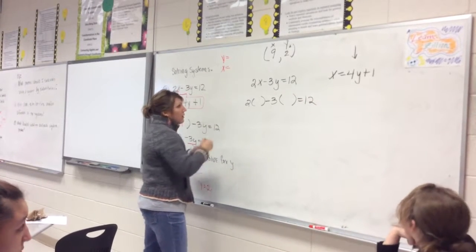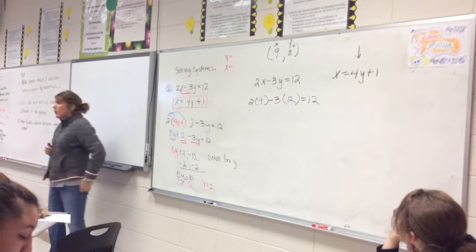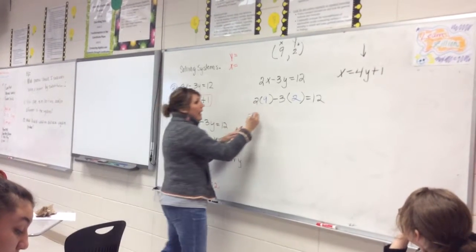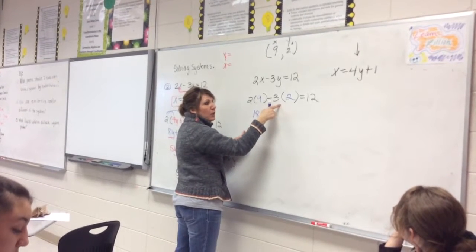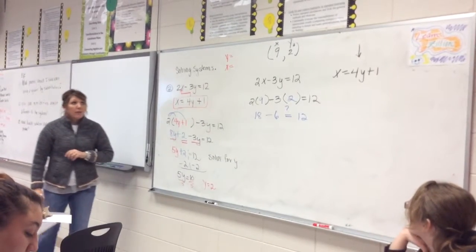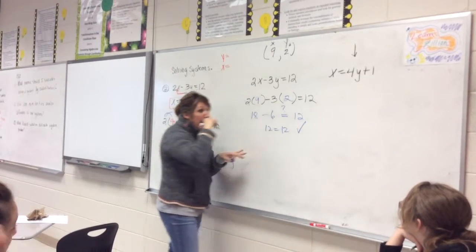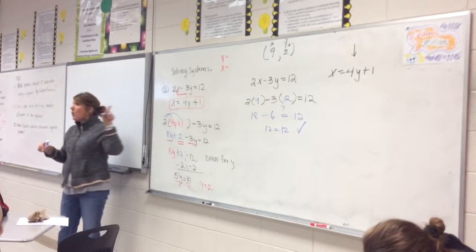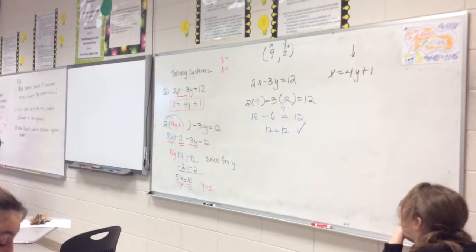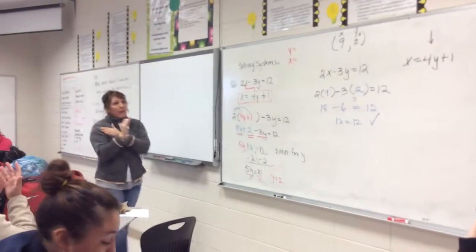And plugging in those values, you have 9 and 2. Alright, let's start with the first one. 2 times 9 gives you 18. So you get 18 minus 3 times 2, which gives you 6. And does that equal 12 as an answer? Yes, it does. 18 minus 6 is 12. And 12 equals 12. I'm going to put a checkmark there because that point, 9, 2, the coordinate point 9, 2, is on that graph. And remember, if you only have one point that satisfies the system, then you have intersecting lines.